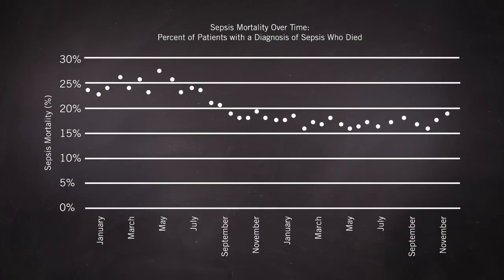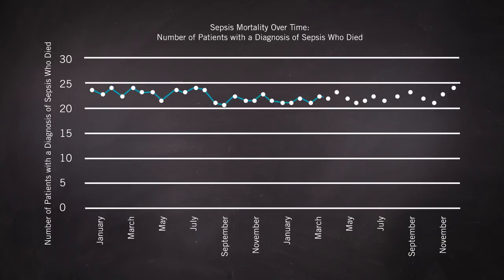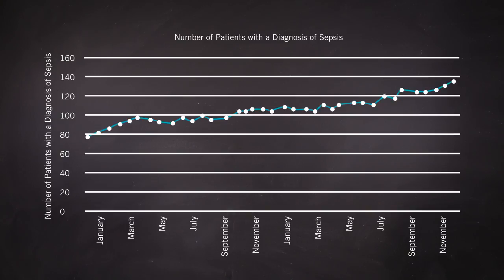Another problem we face is when we look at data in the form of rates over time, say rates of sepsis mortality. When improvement is focused on decreasing sepsis mortality, these efforts can impact associated processes, such as how sepsis is diagnosed, and may lead to patients who previously were not given a diagnosis of sepsis now receiving one, increasing the number of patients with sepsis over time. If we look at sepsis mortality as a rate, even if the same number of people are dying, the increase in the denominator will lead to a reduction in the rate. So we need to be careful when looking at rate data over time to make sure real improvement is occurring, rather than some unintended artefact.